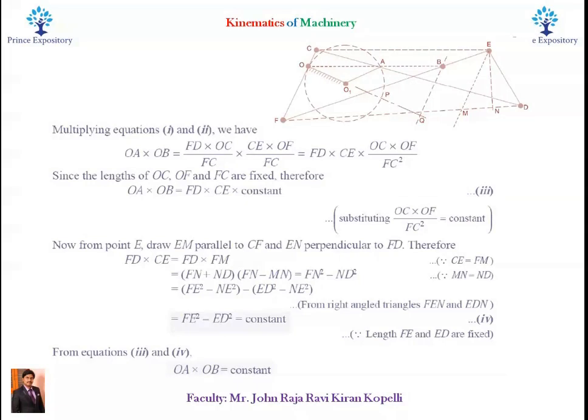It therefore follows that if the mechanism is pivoted about O as fixed point, and the point A is constrained to move on a circle with center O1, then in this mechanism, point B will trace a straight line perpendicular to diameter O-P produced.